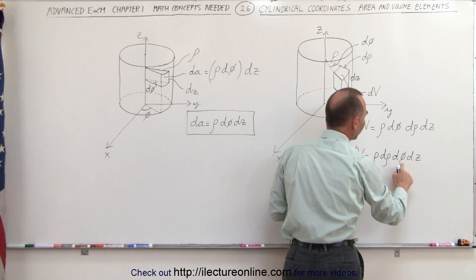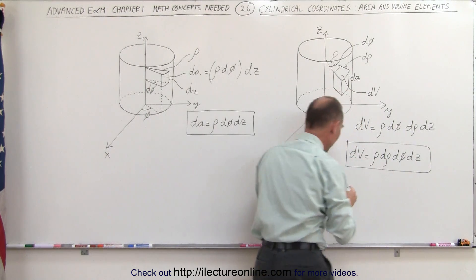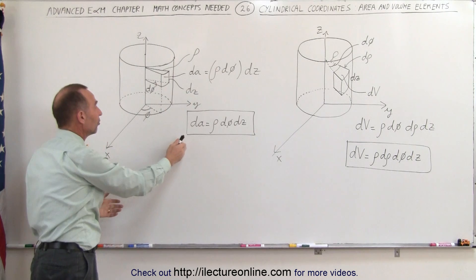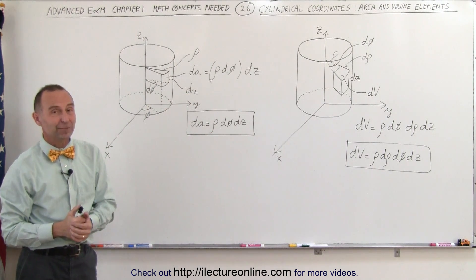because typically we write rho, phi, and z in that particular order. And that's how we come up with the volume element in cylindrical coordinates. And this is the area element, and there we have the volume element. And that's how it's done.